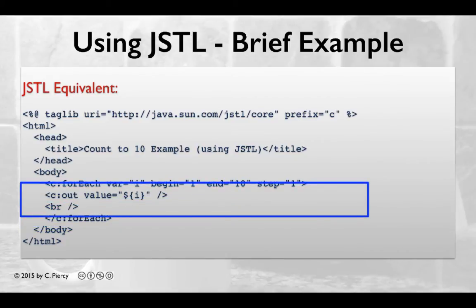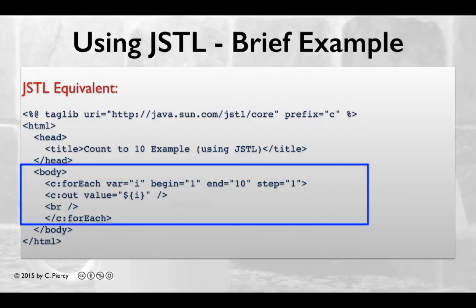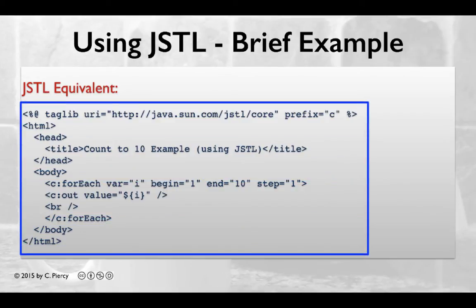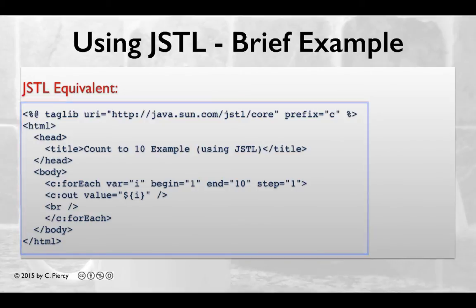In the center of the loop, we're simply printing out the value of i. In later videos, we'll look at this JSTL tag and others in more detail.